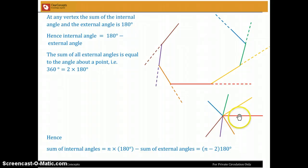Now, it's easy to see that the angle between this solid red line and this solid yellow line is the same as the exterior angle here. Similarly, between the yellow line here and the green line here is the same as the exterior angle here. So, in other words, here we have the sum of all the exterior angles of the triangle. And you can easily see that that is basically the angle about a point, which is 360 degrees, 2 times 180 degrees. So, now, if we have n such vertices, then the sum of the internal angles would be just n times this - n times 180 degrees minus the sum of all the external angles, which is n times 180 degrees minus 2 times 180 degrees, which gives us n minus 2 times 180 degrees.